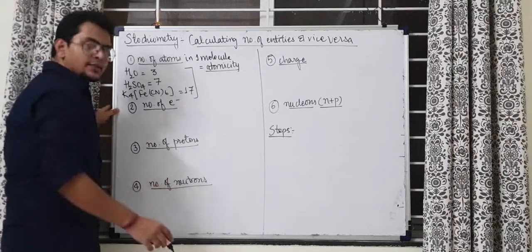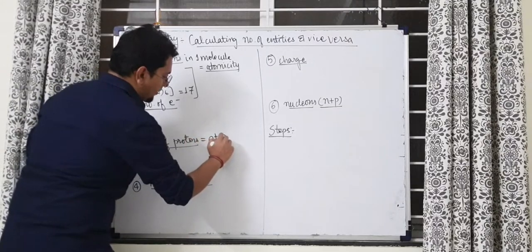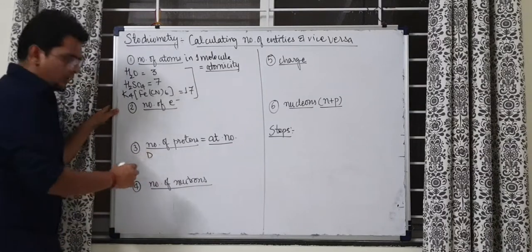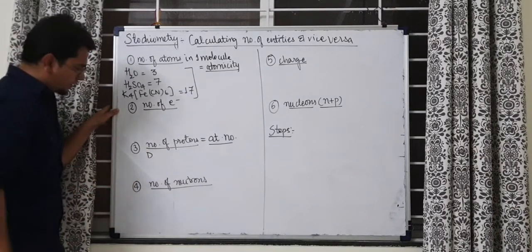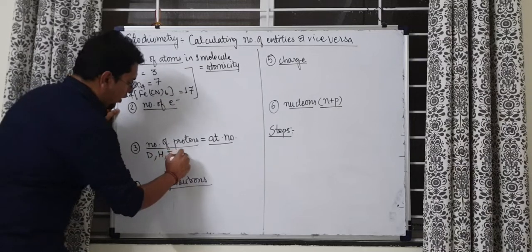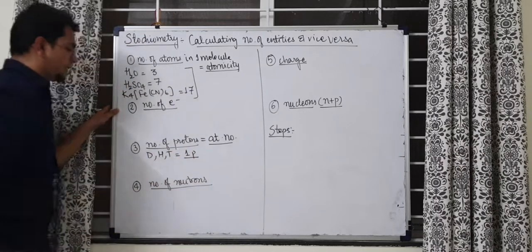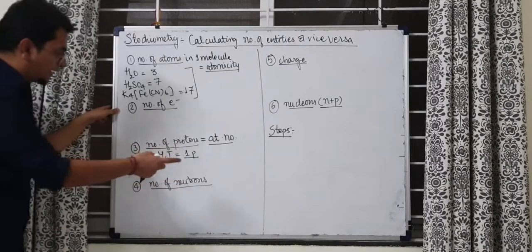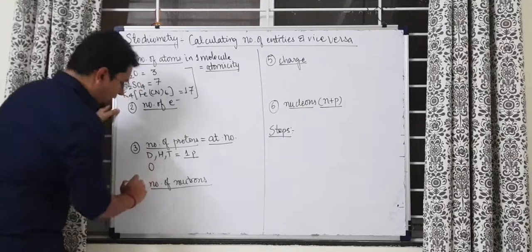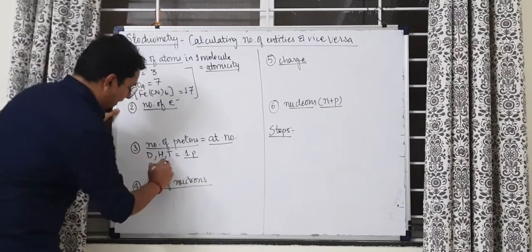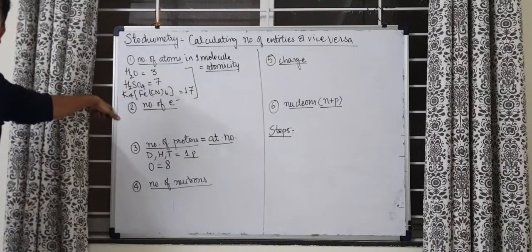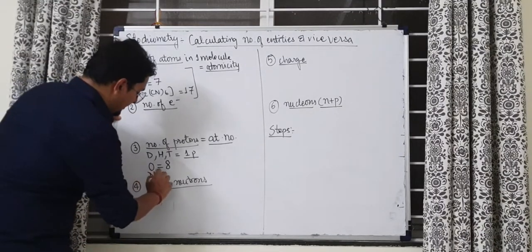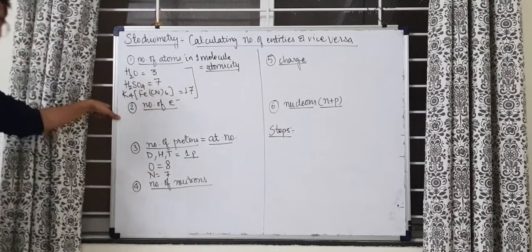How to get number of protons? Easiest one. Number of proton is equals to atomic number. For example, if they ask you for deuterium. Now, deuterium is an isotope of hydrogen. Deuterium, hydrogen, tritium, all of them have one proton inside the nuclei. Then how they differ? They will differ here in number of neutrons. But number of protons are same. In the same way, oxygen has atomic number 8. Understand, mass is different, atomic number is different. Atomic number of oxygen is 8. Nitrogen, 7. And that is the number of protons you have.